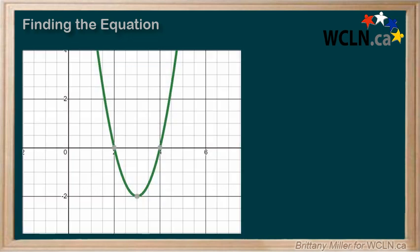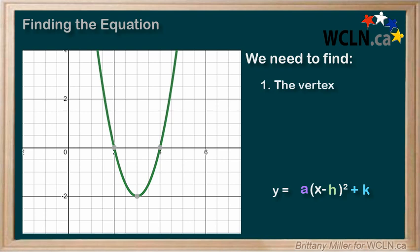Behold this mystery parabola. In order to fill out our equation in vertex form, we need the following information. One, the vertex. The vertex of our parabola is h,k, so by finding the vertex we get h and k. It's like a two-for-one deal.